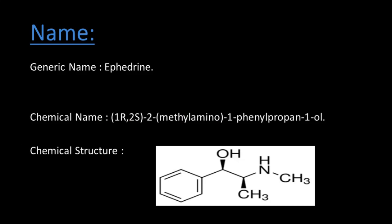Generic name: ephedrine. Chemical name: (1R, 2S) 2-methylamino-1-phenyl-propan-1-ol. R and S are the configurations of the two chiral stereo isomers of this compound. R represents rectus, meaning clockwise direction, whereas S represents sinister, meaning anticlockwise direction. This is how the configuration of organic compounds is defined in organic chemistry when a compound has chiral atoms or stereo isomers.